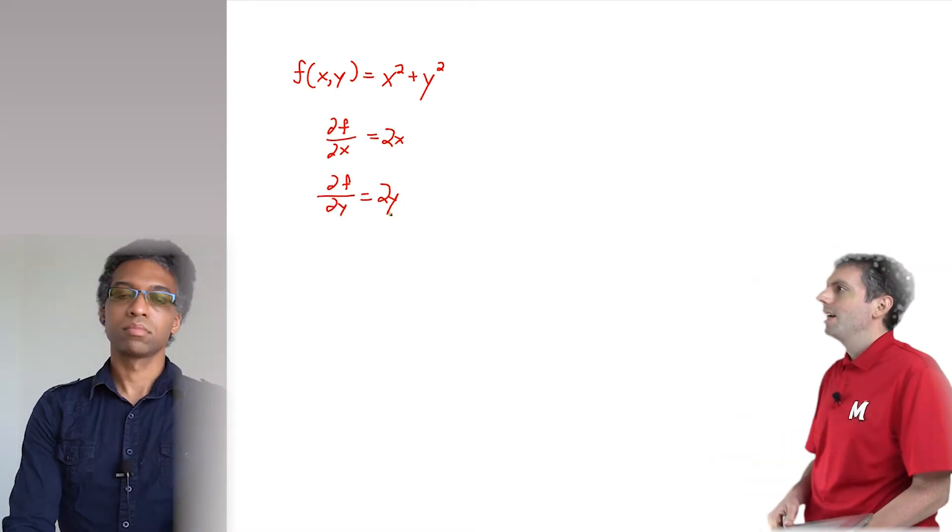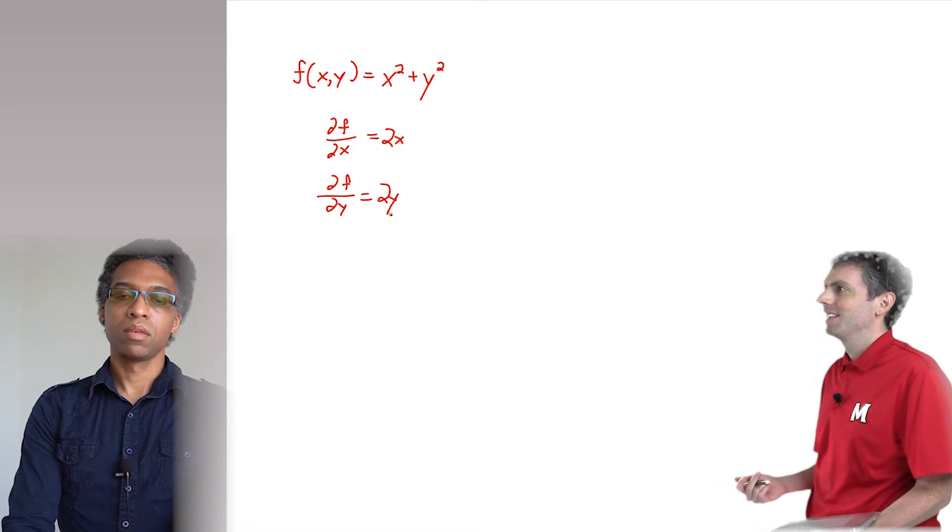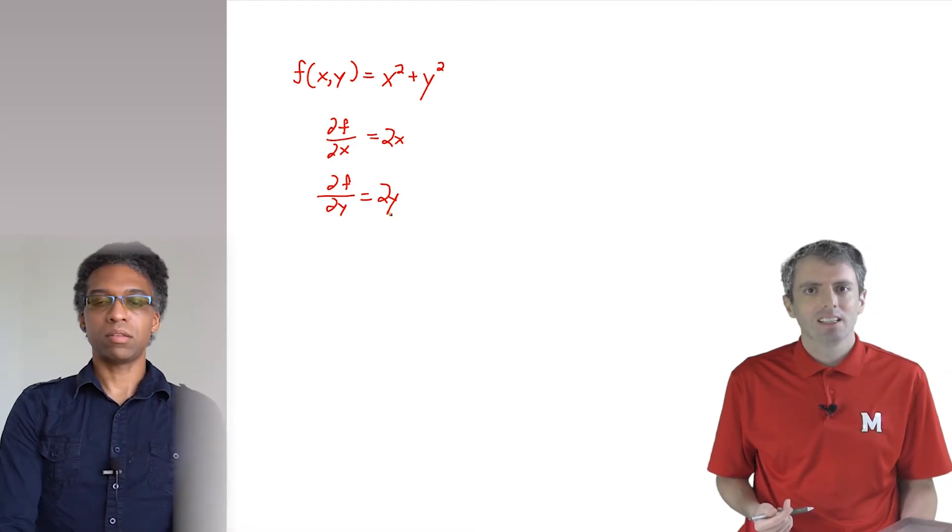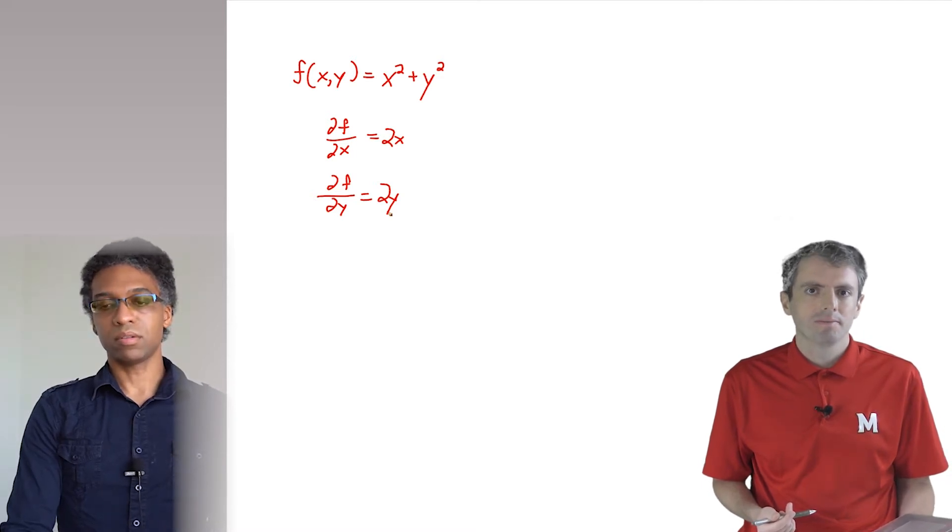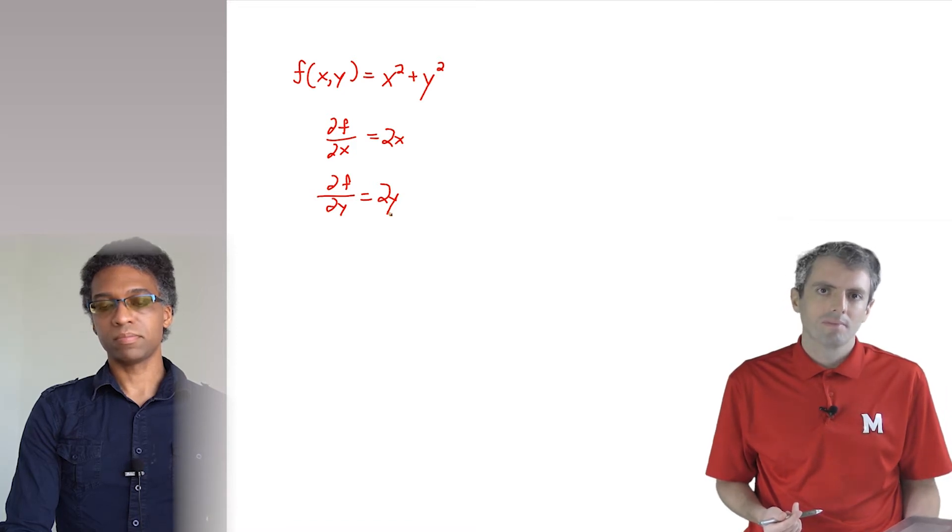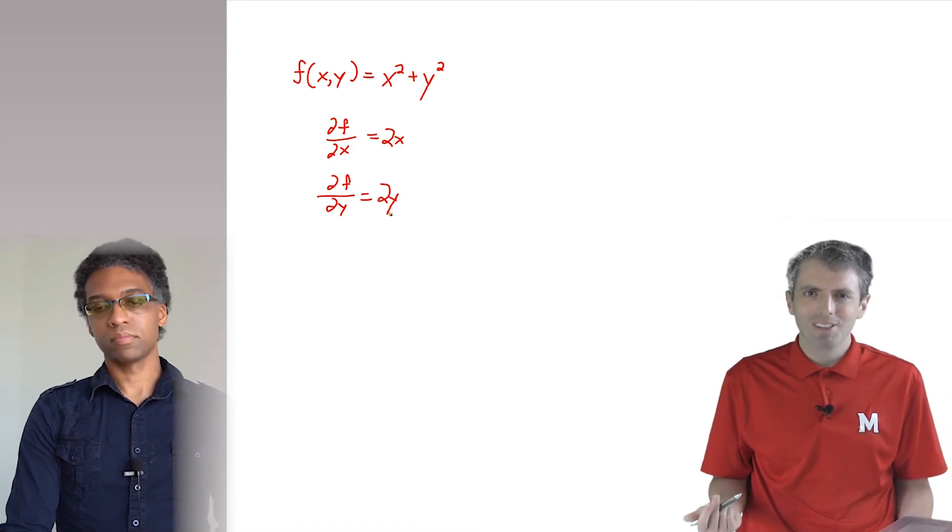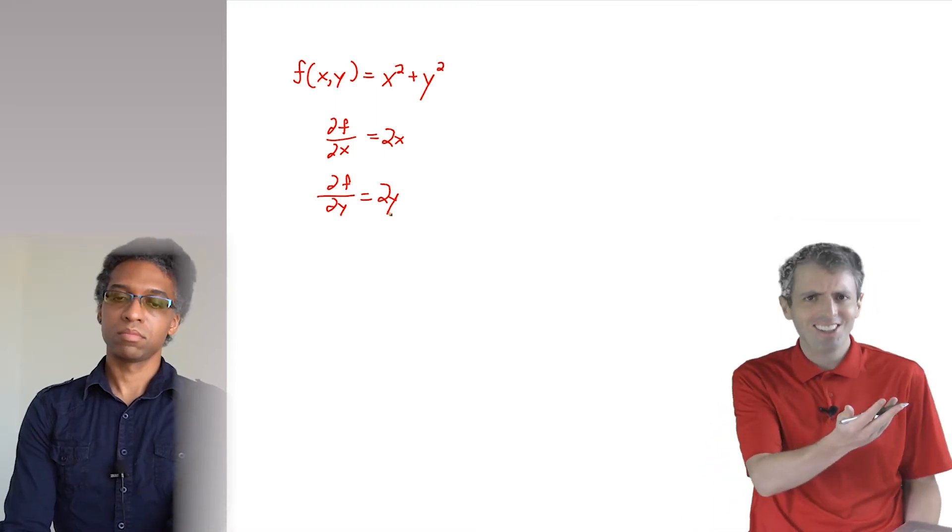That's not too bad. So why do we want the gradient of a function? Well, later we'll be talking about loss functions, and we'll want to make these functions as small as possible. So let's use the gradients to make f as small as possible. Well, that simple. It's the smallest when x and y are both zero. Just look at it.